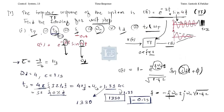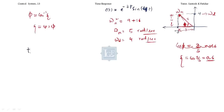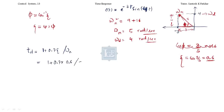Now we calculate td, tr, and percentage Mp. The delay time formula is td = (1 + 0.7ζ)/ωn = (1 + 0.7 × 0.6)/5. Be careful — do not use 0.4 here; this is the natural frequency. Calculating gives approximately td ≈ 0.284 seconds.